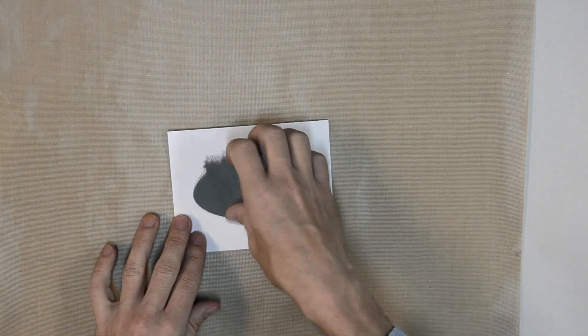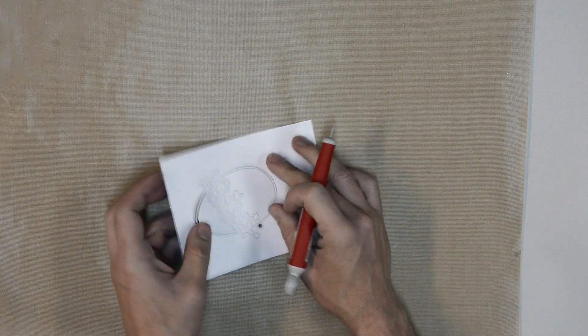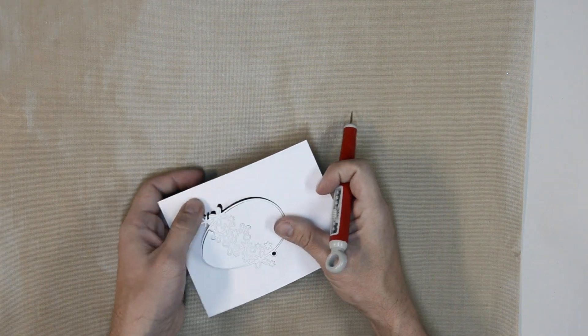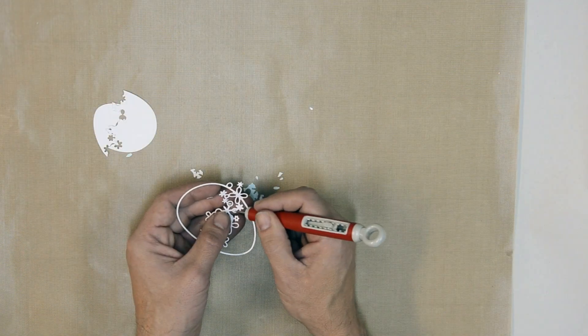Once it's finished, I'm going to remove the die, and I'm going to start poking out all the spots that need to be removed. This craft pick from Tim Holtz helps me get into all the little tiny spots that need to be poked out. It's an excellent tool. I can't recommend it enough.